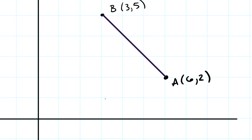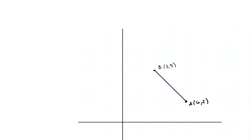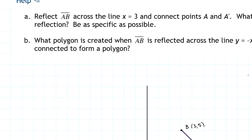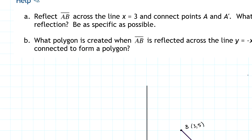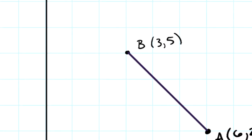So those are the points AB, and I drew it as a segment because it said draw the line segment, not the entire line. The next thing it says is, for part A, it says reflect AB across the line X equals 3.